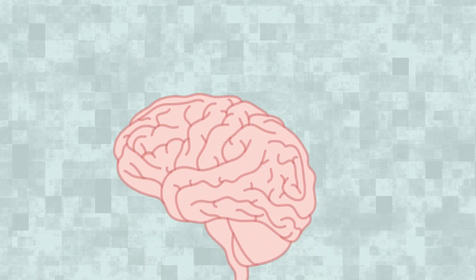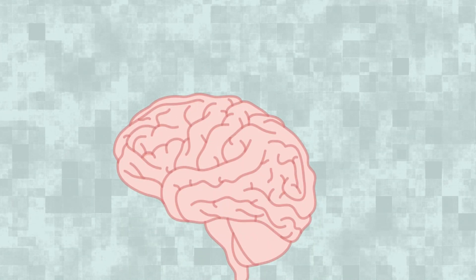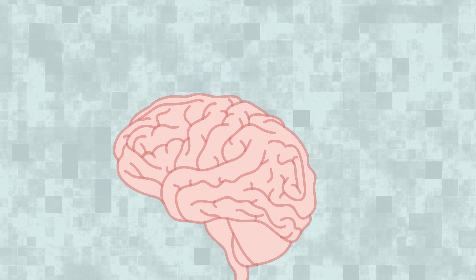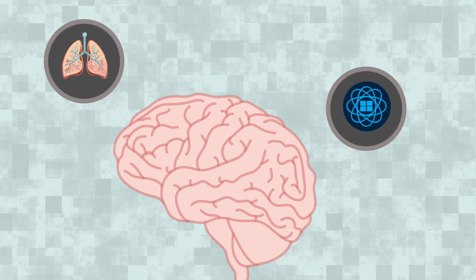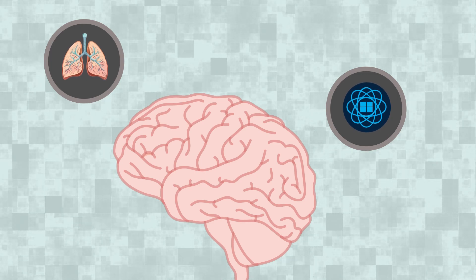The brain, made up of 86 billion neurons, is intricately wired to support everything from basic functions like breathing to more complex activities like enjoying a Science Verse video.